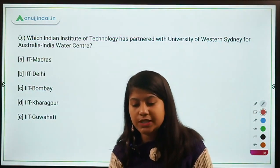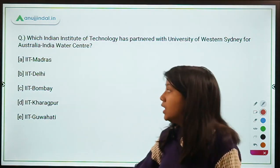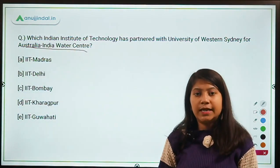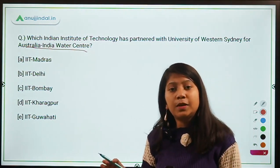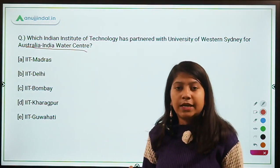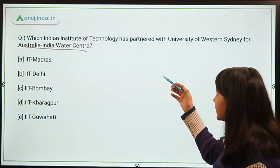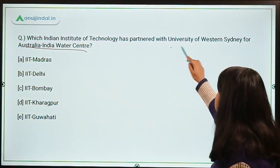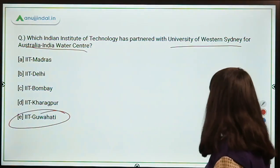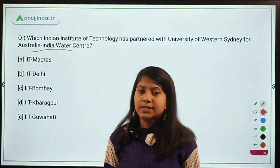Which Indian Institute of Technology has partnered with the University of Western Sydney for the Australia-India Water Center? The name of the center clearly indicates its purpose — to innovate in the sector of water conservation. IIT Guwahati has partnered with the University of Western Sydney to operationalize this India-Australia Water Center.